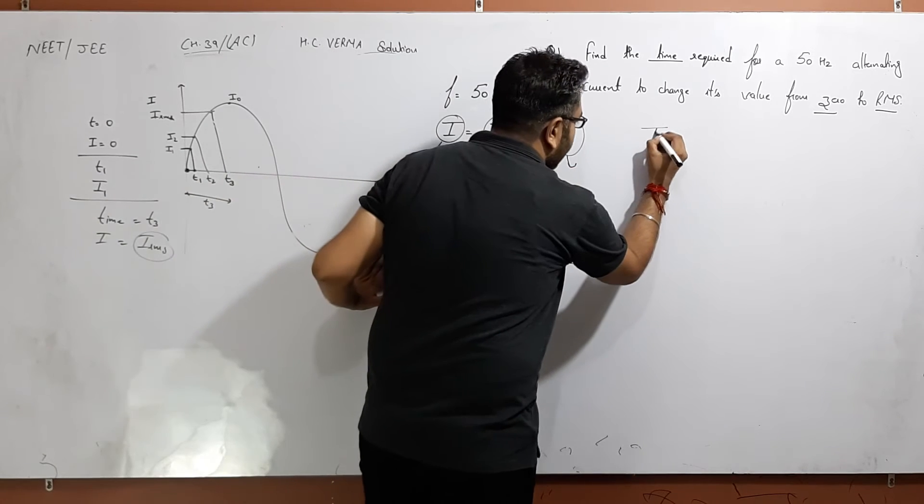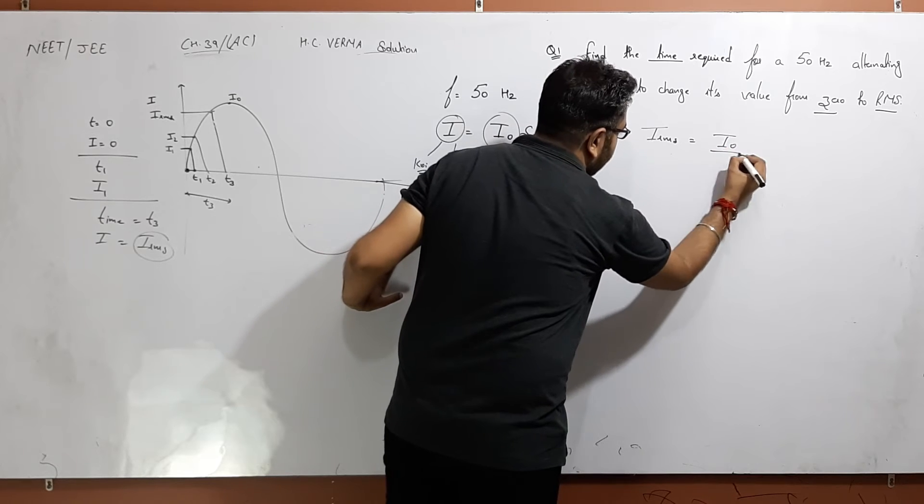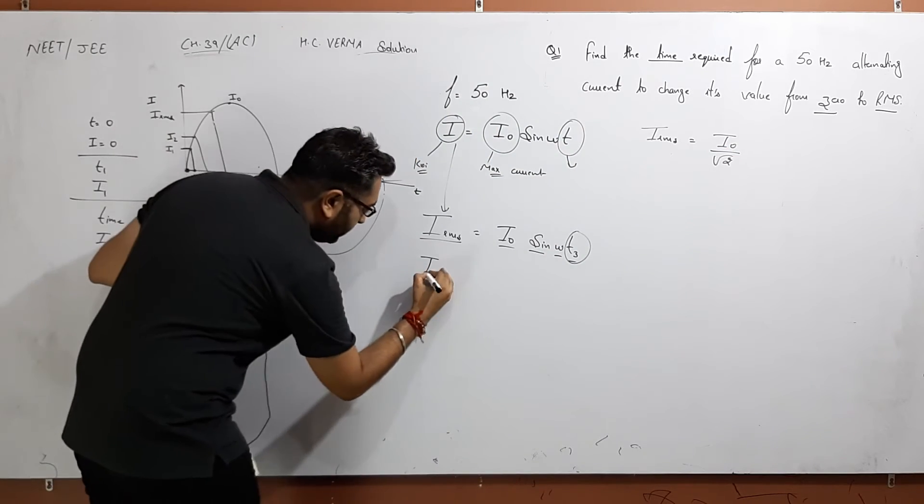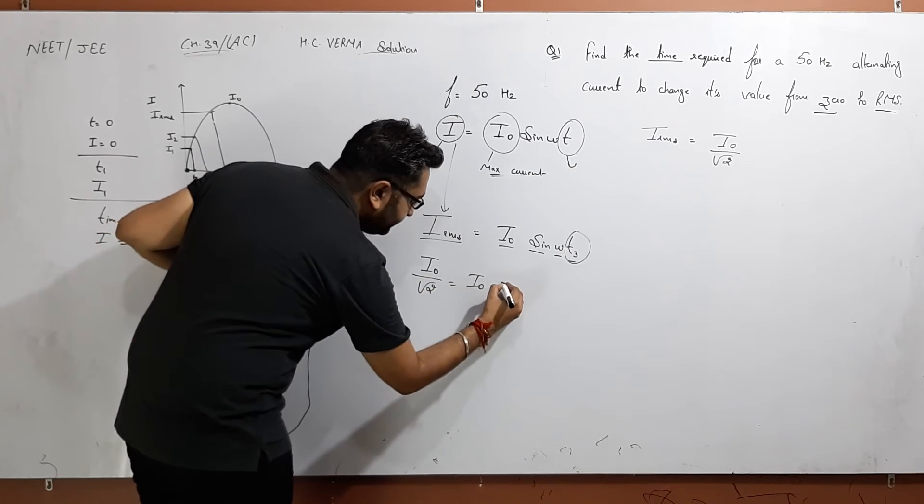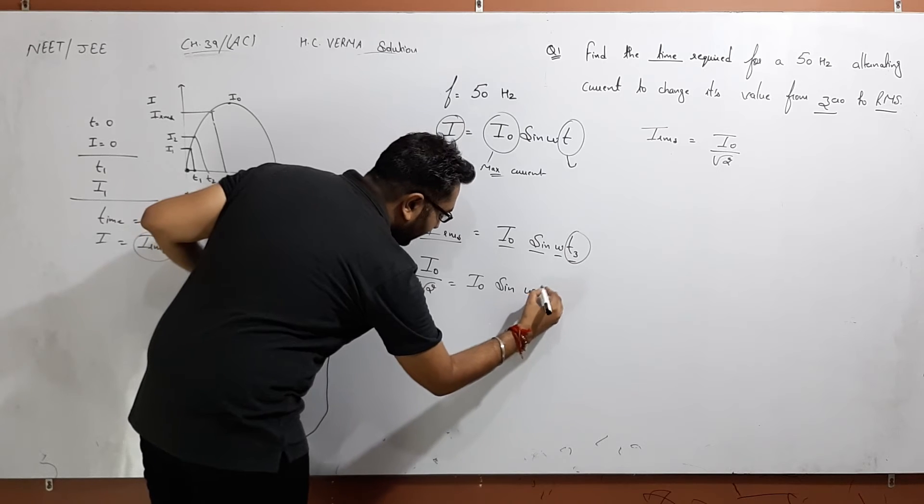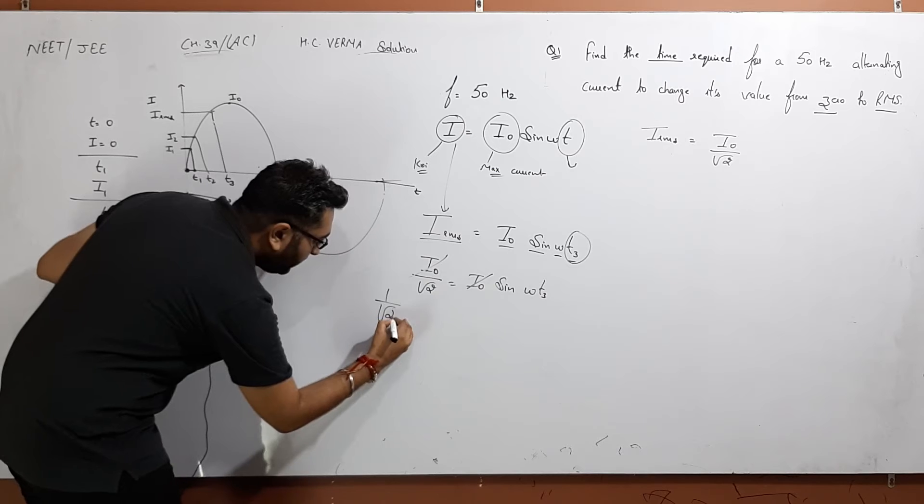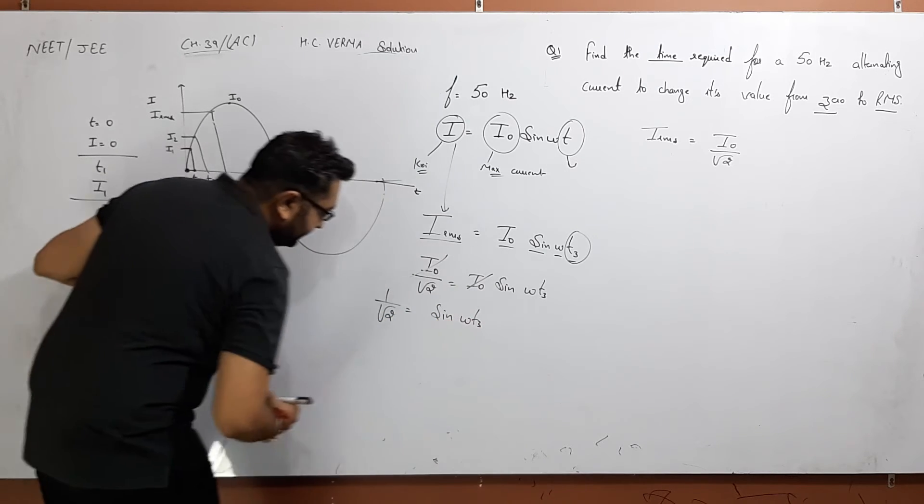IRMS equals I naught sin omega T3. Now, IRMS and I naught: IRMS is equal to maximum current by root 2. So I naught by root 2 is equal to I naught sin omega T3. I naught cancels, so 1 by root 2 is equal to sin omega T3.